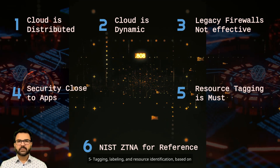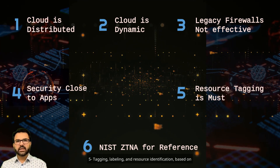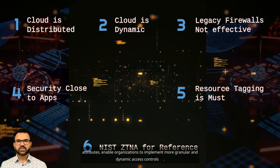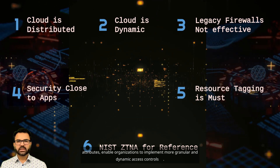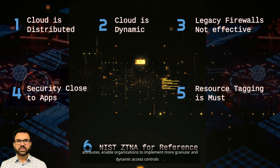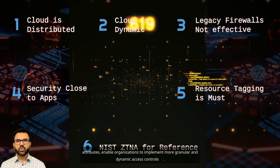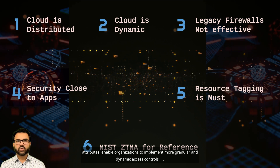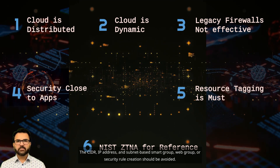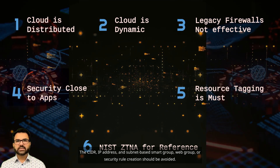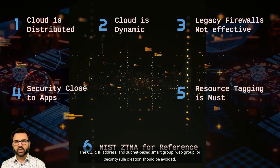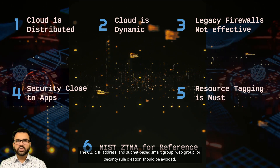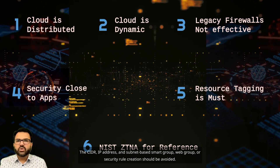5. Tagging, labeling, and resource identification based on attributes enable organizations to implement more granular and dynamic access controls. The CIDR, IP address, and subnet-based smart group, web group, or security rule creation should be avoided.